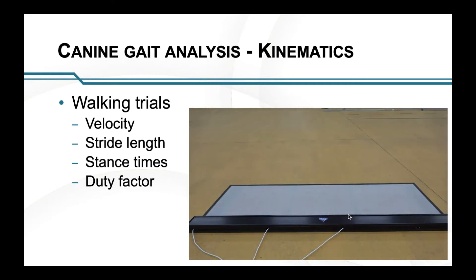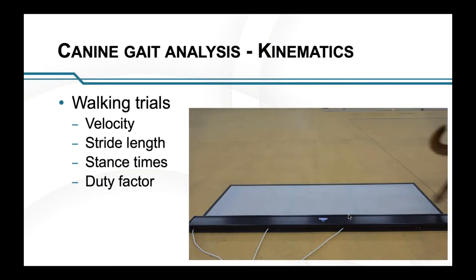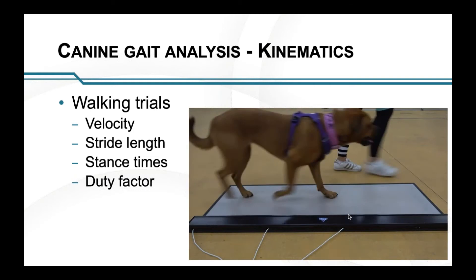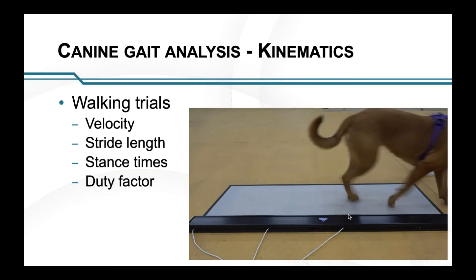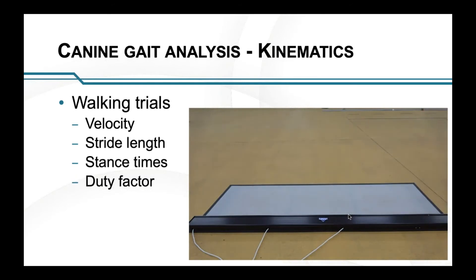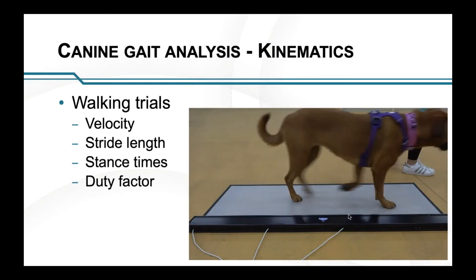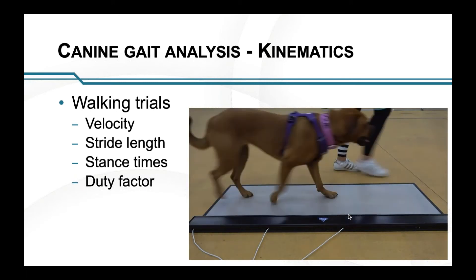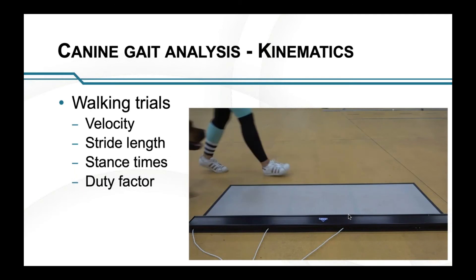I would actually recommend normalising to duty factor, which is stance time as a proportion of stride time. But one big thing is that stance time, stride length, duty factor, force — anything that you're looking at correlates heavily with speed. So you can't be comparing trials of different speeds. All of these will change with speed.